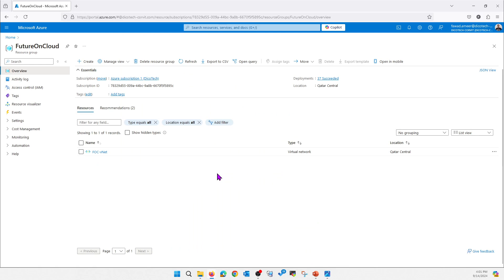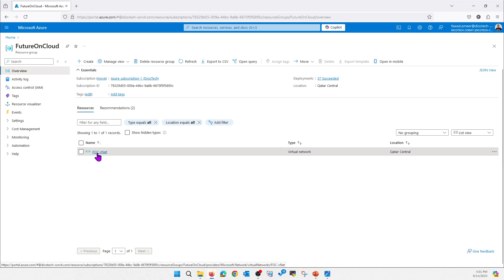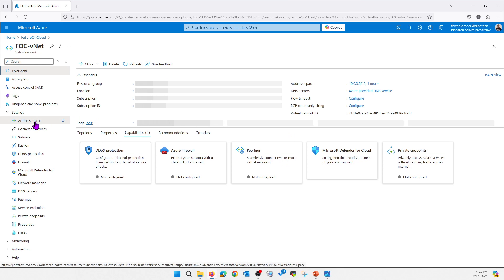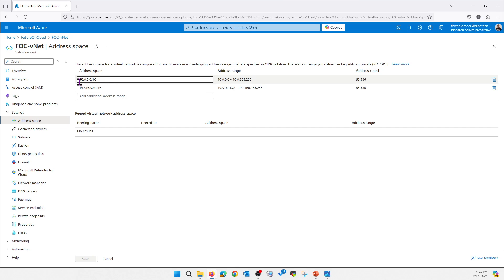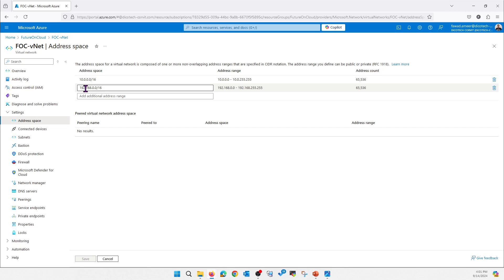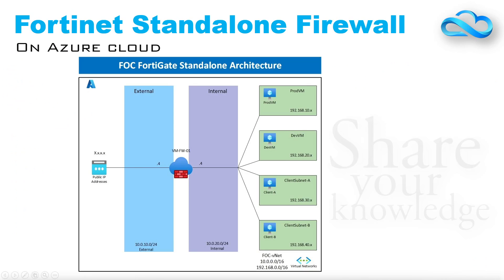I am logged in on my Azure portal. This is my subscription, Future on Cloud. Here I have configured a VNet with two address spaces — one is for the firewall and one is for the servers. The external interface of the firewall will be 10.0.10.x, the internal network will be 10.0.20.x, the management interface will be 10.0.30.x, and for my production virtual machine I will use the 10.0.10.x and 10.0.20.x subnets.